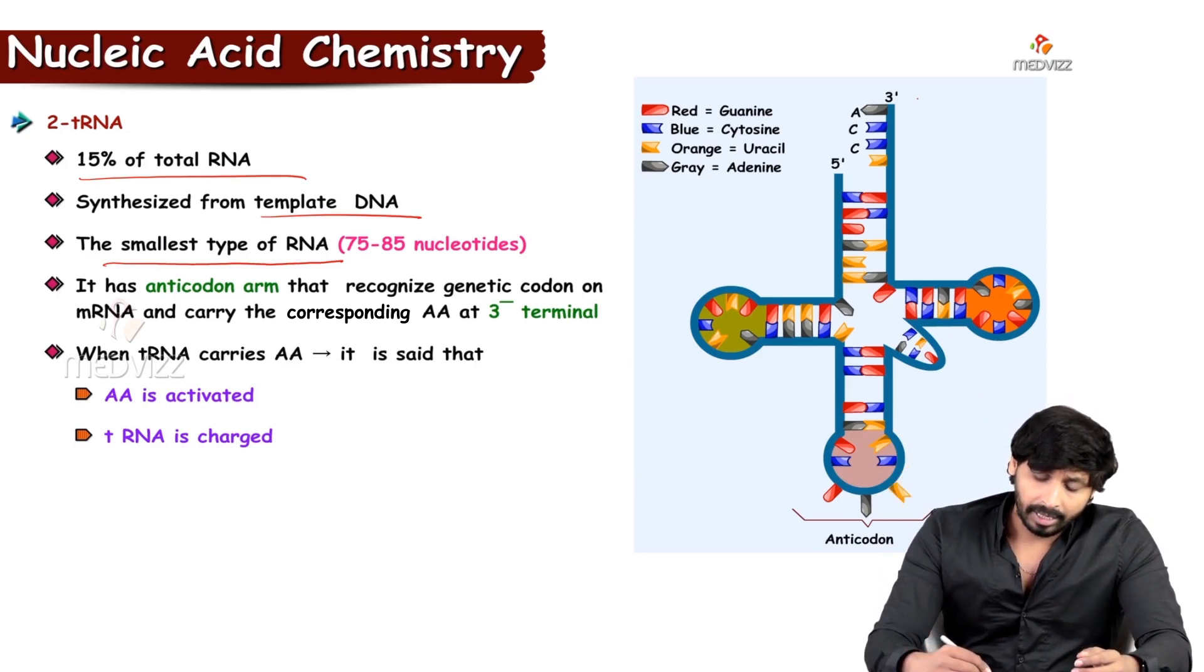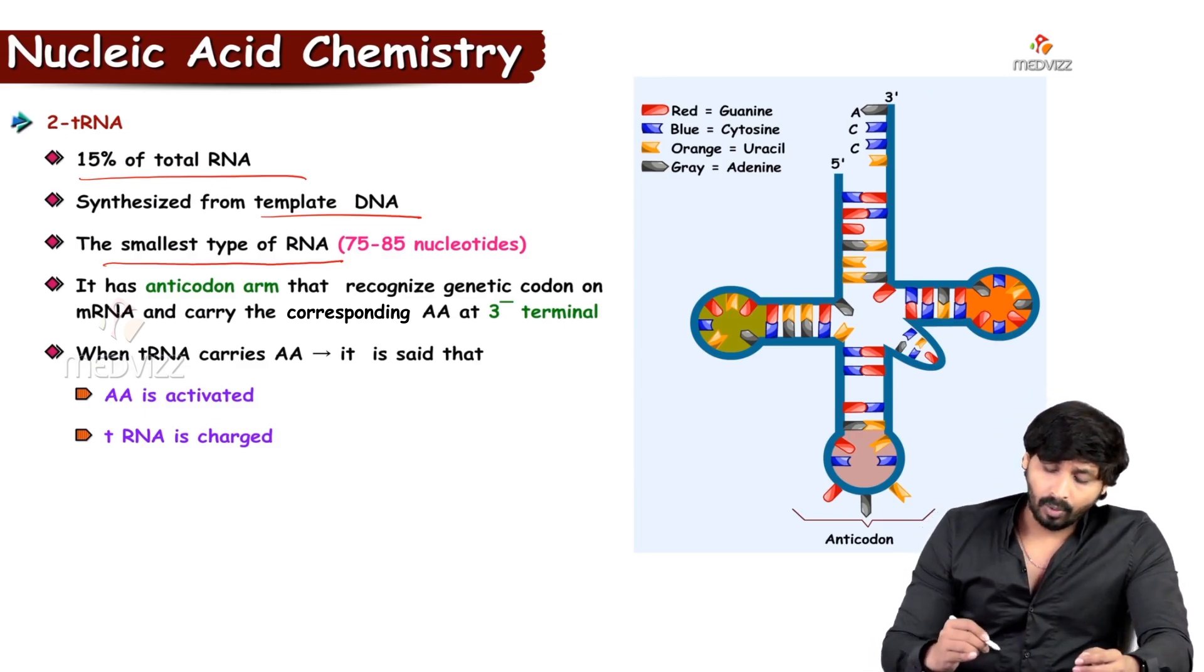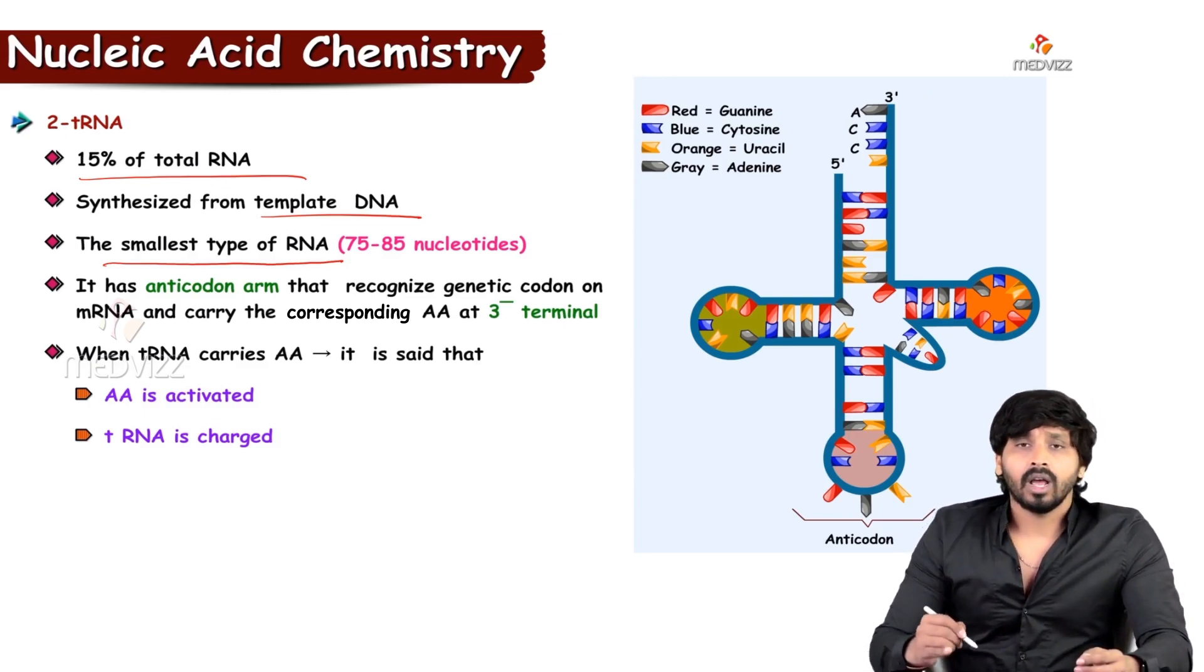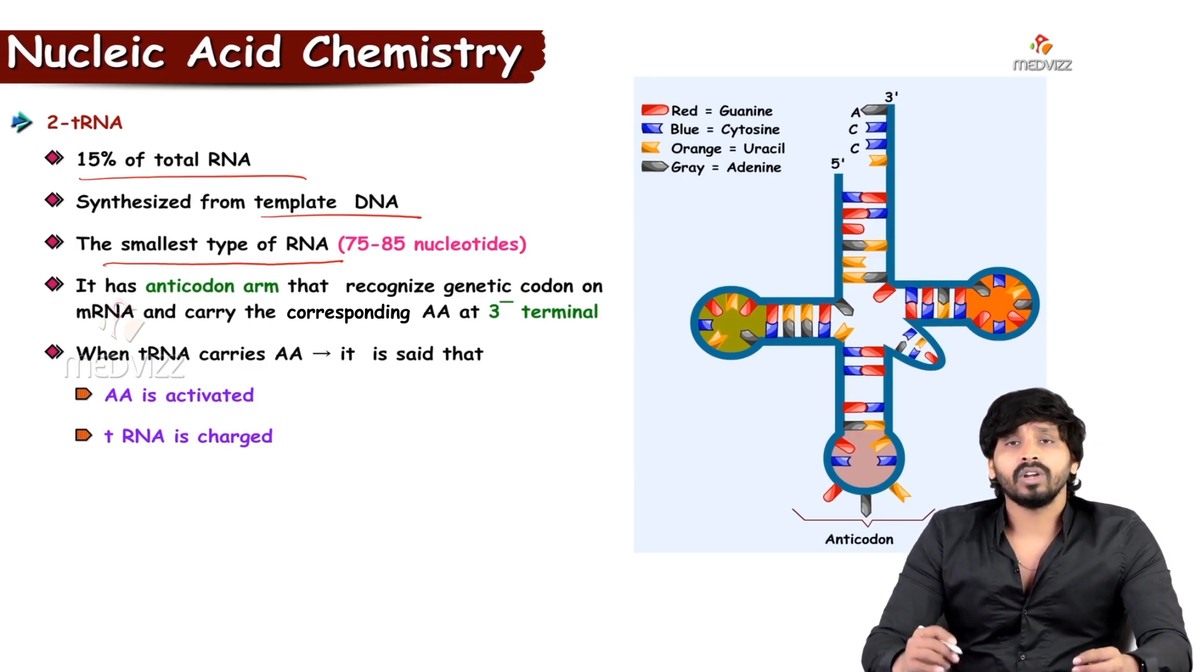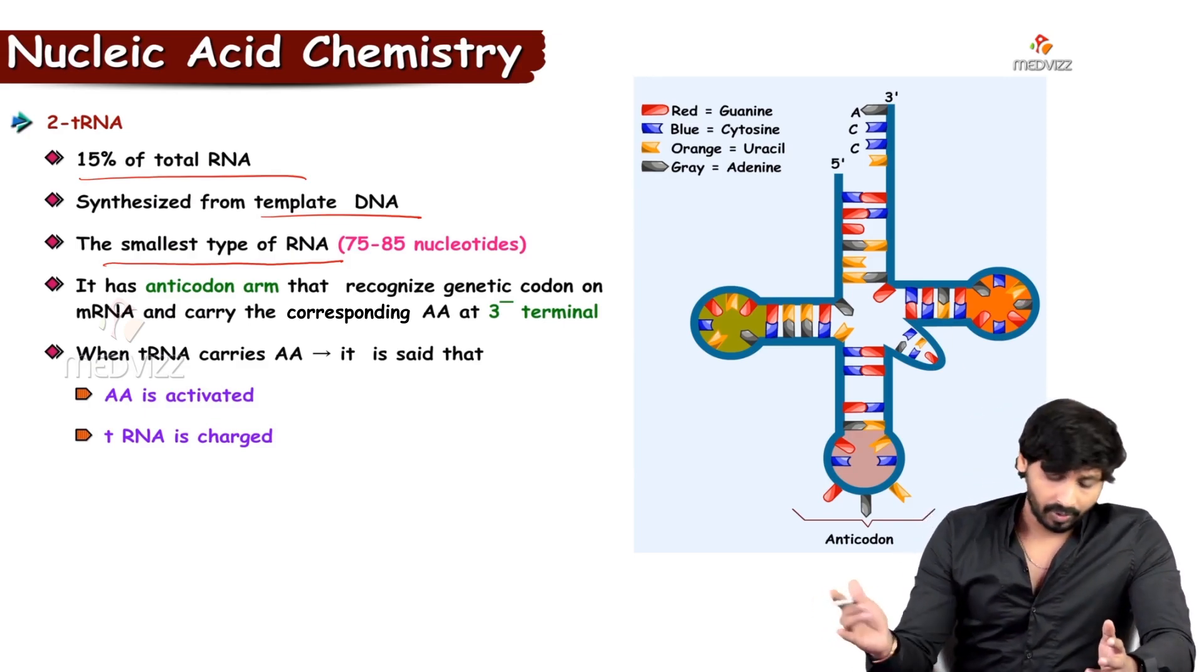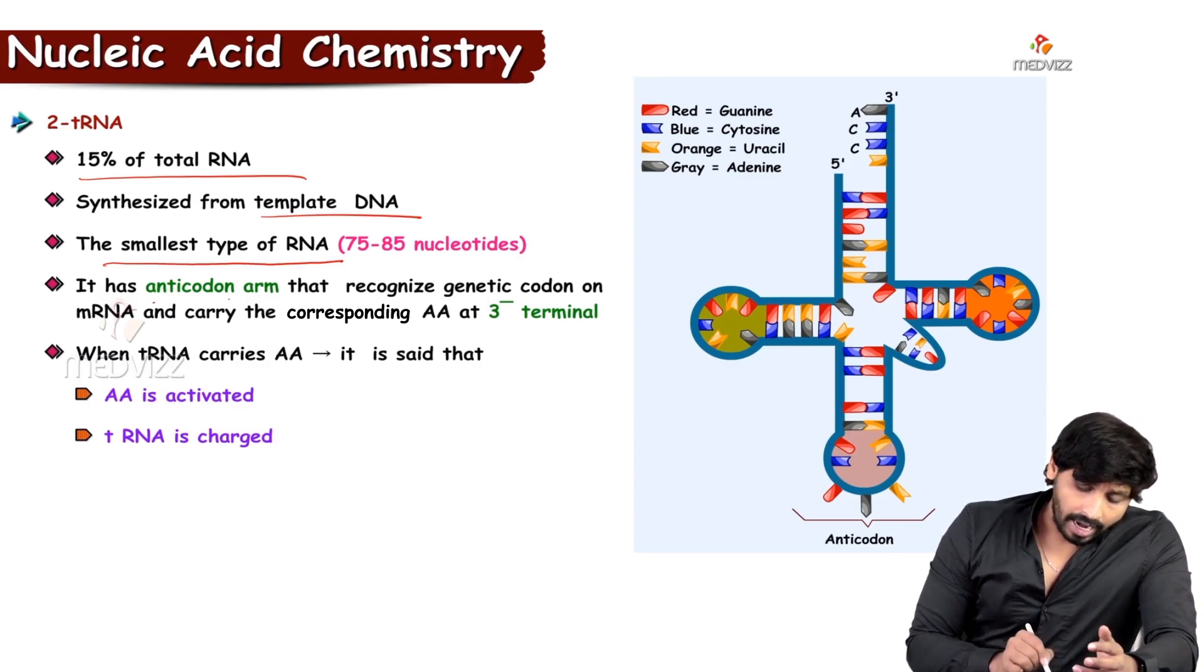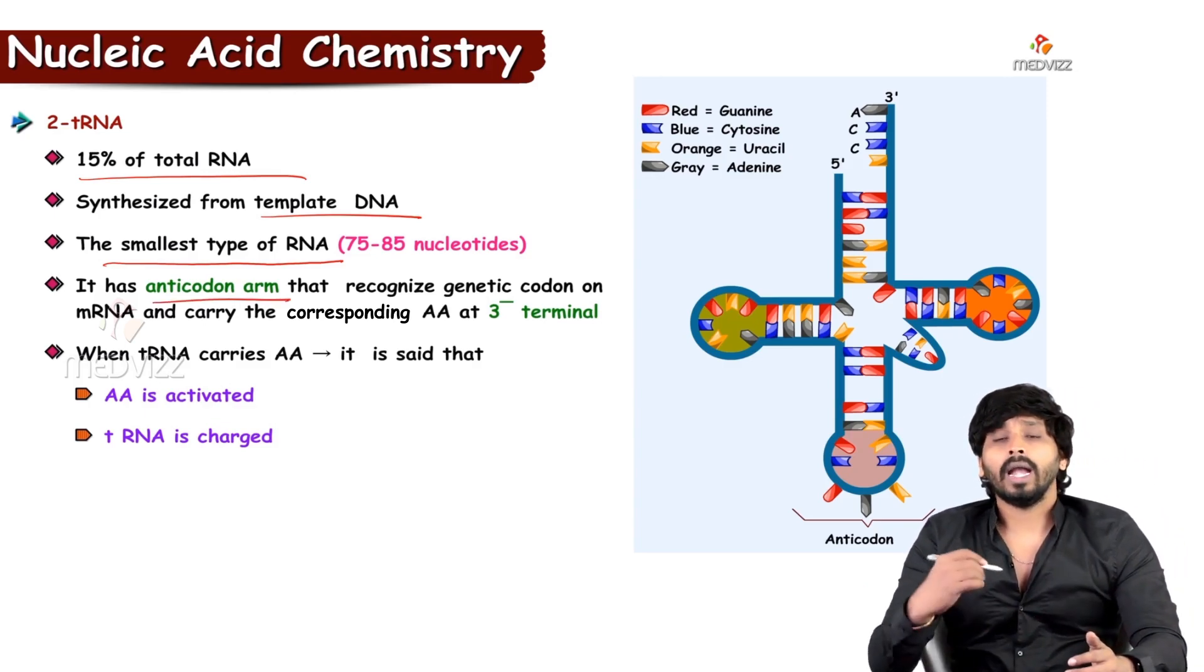Like 3 prime end, one is D arm, A arm, and C psi C arm, variable arm. So different arms are there in tRNA, and it has got anticodon arm.